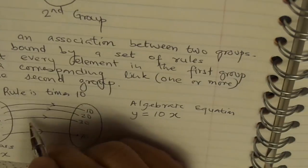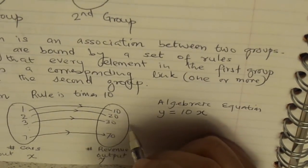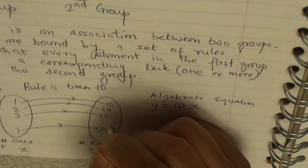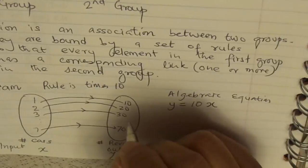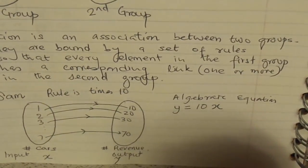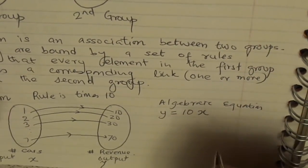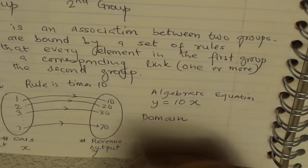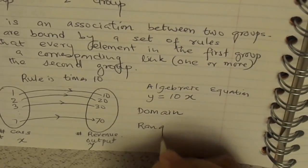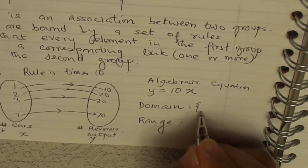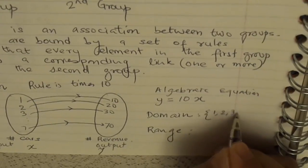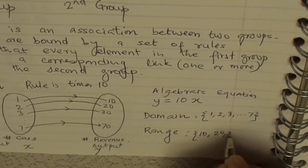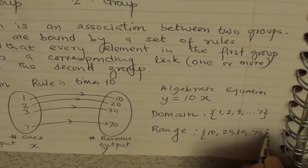Every element in Group 1 is uniquely linked with an element of Group 2. The value of a Group 2 element can be determined by multiplying the value of the input element of Group 1 by 10. The set of elements in Group 1 is known as the domain, and the set of elements in Group 2 is called the range. In our case, the domain is the set of numbers 1 to 7, and the range is the dollar amounts: 10, 20, 30, 70.